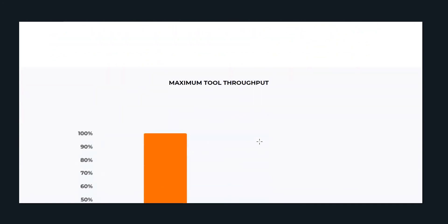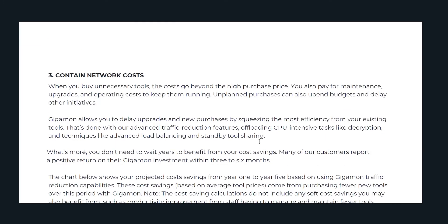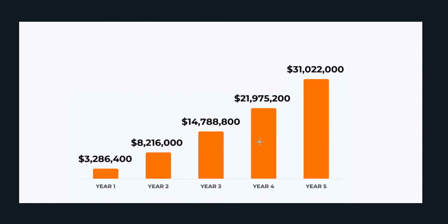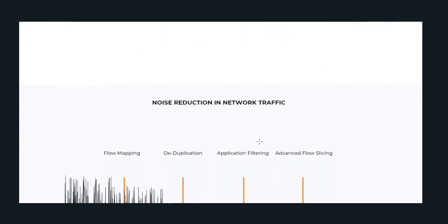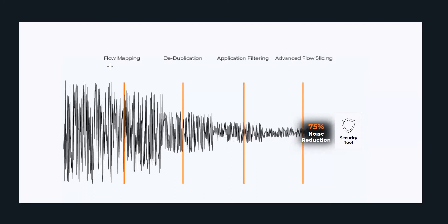And this graph shows you what that difference looks like. For contained network costs, we show you a cost savings forecast over five years — these are cumulative costs and we show you this on an annualized basis. And finally for pinpoint security issues faster, we focus on noise reduction and how noise can be reduced by successively using various Gigamon traffic reduction capabilities. We also give you a calculation of the total noise reduction percentage.